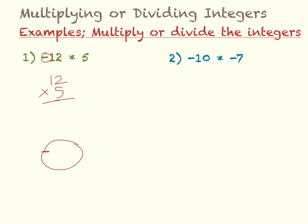So 12 times 5, 5 times 2 is 10, 5 times 1 is 5, 5 plus 1 is 6. So my answer is negative 60.